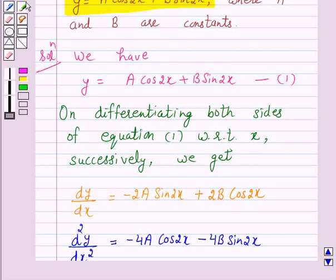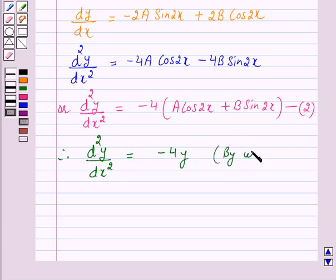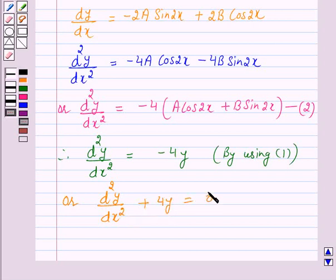Now from equation 1 we have y equals A cos 2x plus B sin 2x. So by using equation 1 in equation 2, we have d²y over dx² equals minus 4y. Or d²y over dx² plus 4y equals 0, and this is free from the arbitrary constants A and B.